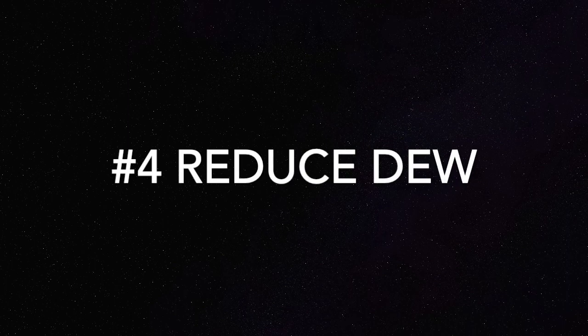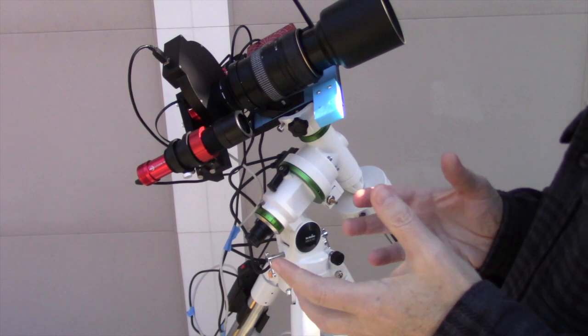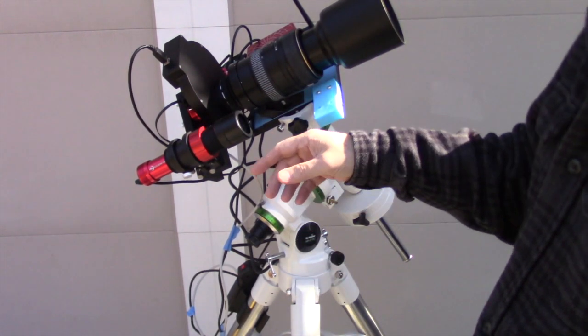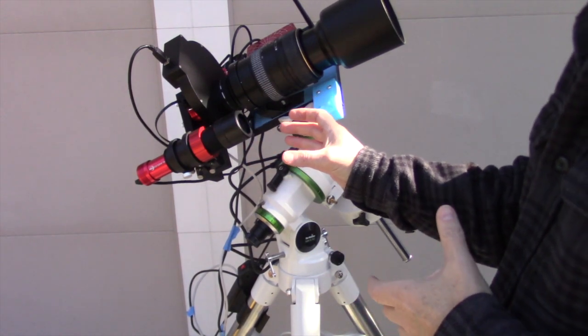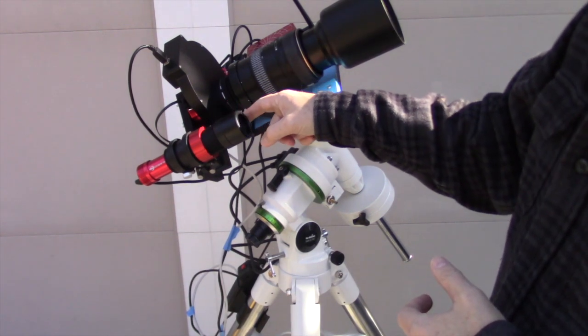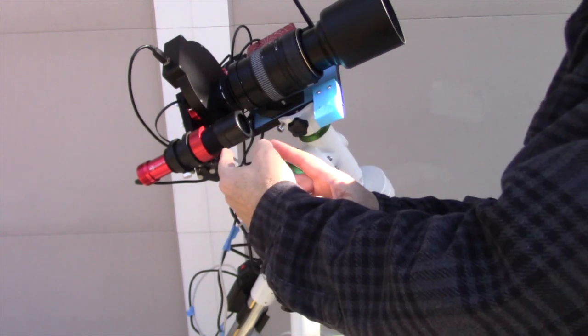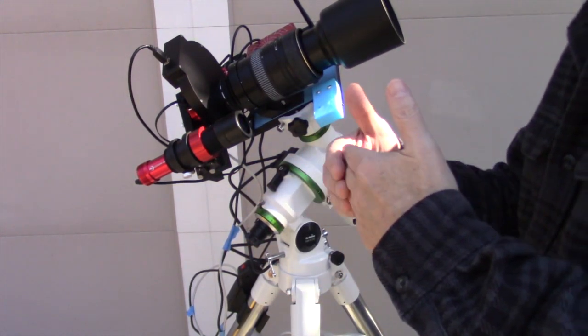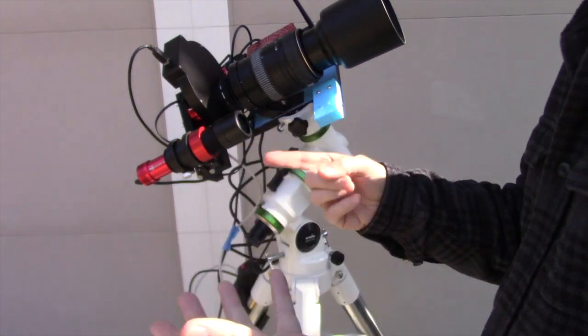Tip number four, reduce dew on your camera. So now dew is an issue both with your imaging train and your guide camera. And in a previous video I was explaining that this particular guide camera doesn't even come with a dew shield. So what I have done is I just got a piece of paper and then I just taped it on and then made a temporary dew shield. And so what that will do is that will just reduce the onset of dew. And of course the final solution is to get a dew heater.